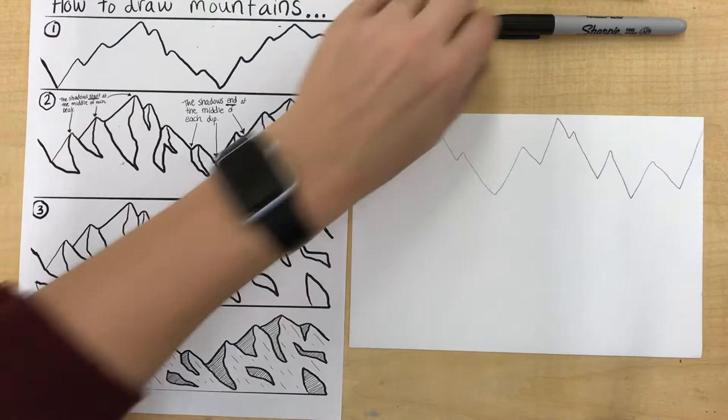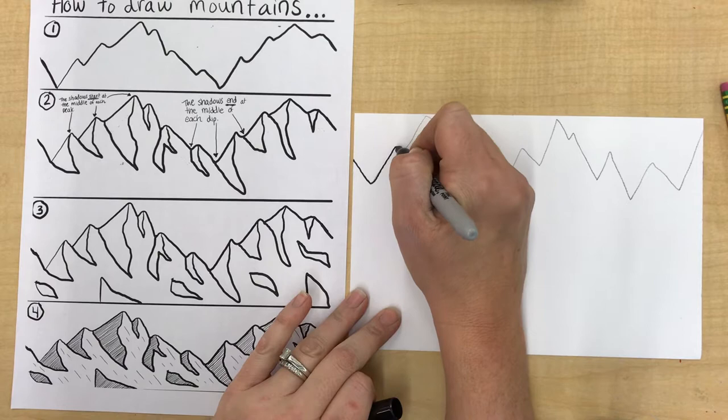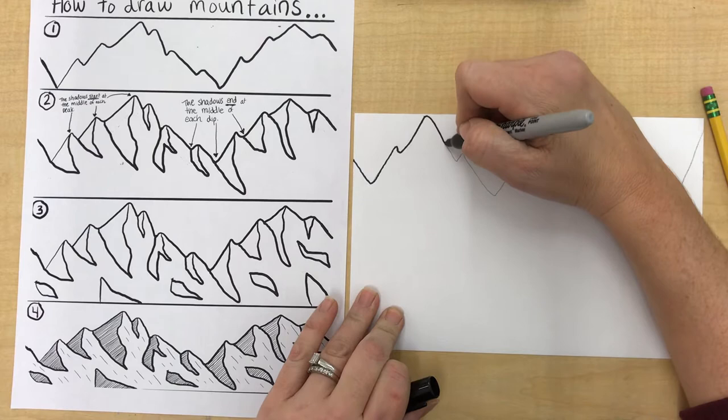After you've done that, you are going to Sharpie that line with the fine point Sharpie, the regular tip, not the Sharpie pen. Just try your best to stay on top of your pencil line. We're not making new lines with the Sharpie. We're just tracing the ones that we have to make them permanent, because we will eventually paint the sky.